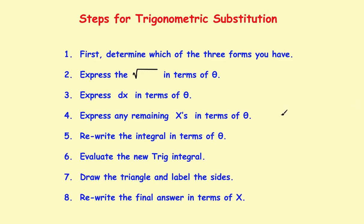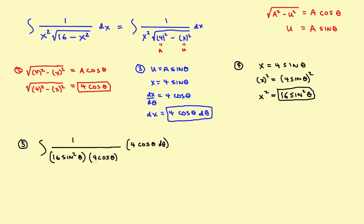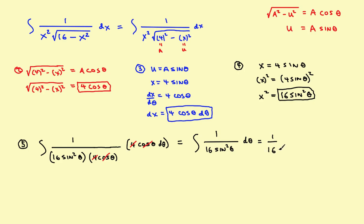Step 6: evaluate the new trig integral. We can simplify right away — the 4 in the numerator cancels with the 4 in the denominator, and cosine in the numerator cancels with cosine in the denominator. What we're left with is the integral of 1 over 16 sine squared theta, dθ.